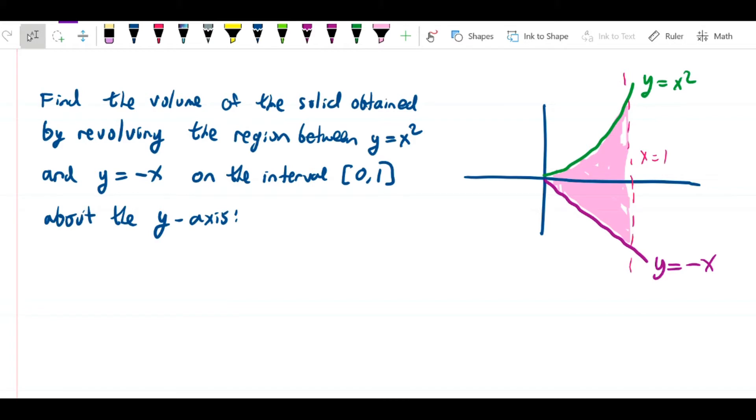So what we want to do is find the volume of the solid obtained by revolving the region between y equals x squared and y equals negative x on the interval 0, 1 about the y-axis. So once again, we're going to revolve around that axis, I'll just put in the x and the y, and the difference here is simply that the height function for the cylinder is going to be different.